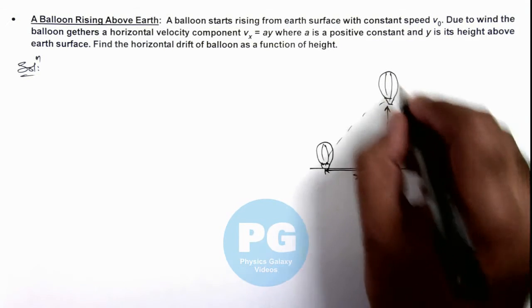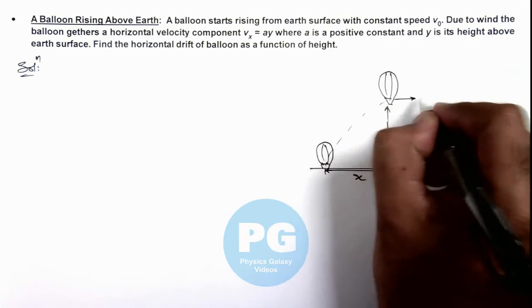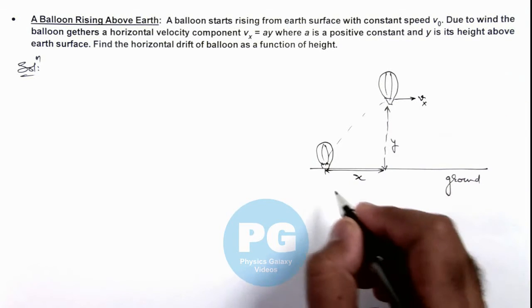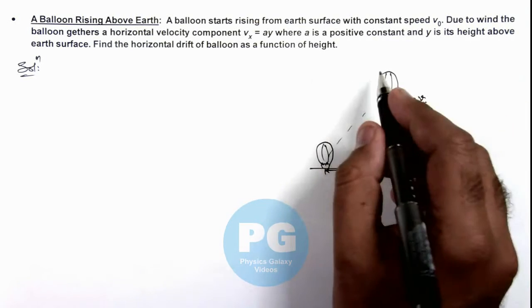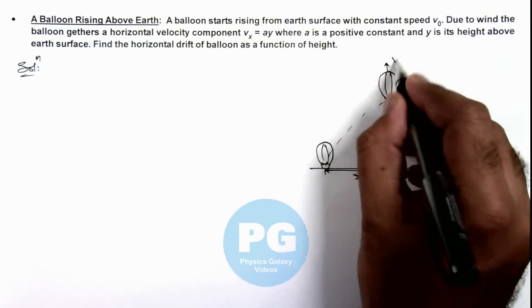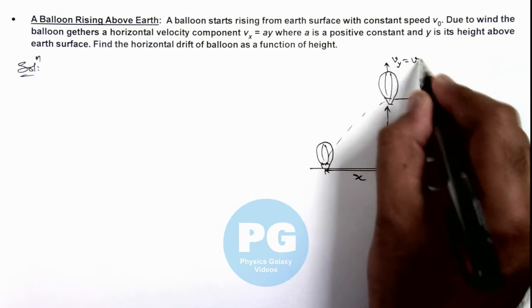Now in this situation it has one velocity in horizontal direction v_x, and it is given that it is going upward with the constant speed v_y which is equal to v not.